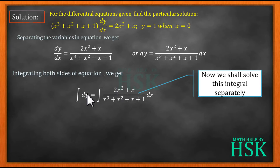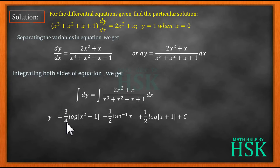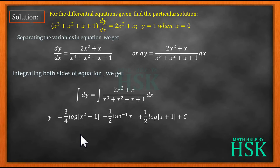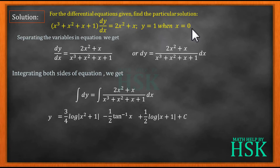Placing this value and writing y for ∫ dy, I obtain the general solution: y = 3/4 log(x²+1) − 1/2 tan⁻¹(x) + 1/2 log|x+1| + C, where C is the integration constant. This is the general solution of the differential equation. To obtain the particular solution, I need to calculate the value of C using the given initial condition y = 1 when x = 0.